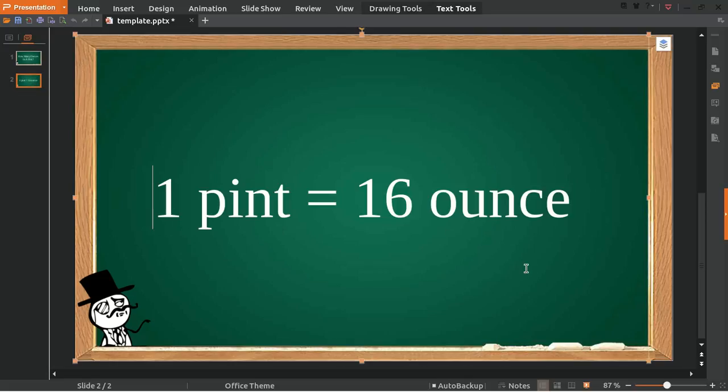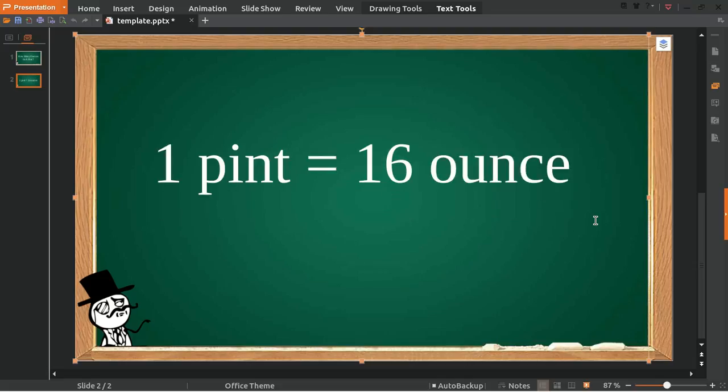So one pint is equal to 16 ounces. In every single pint, there are 16 ounces, and every 16 ounces equals one pint. Now we're going to make a question and answer section for this conversion.